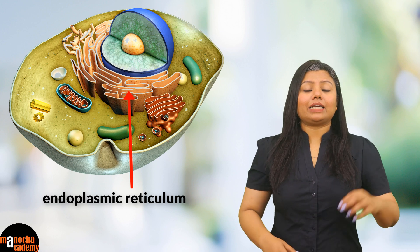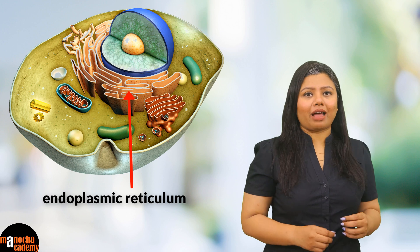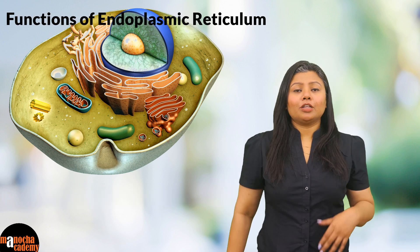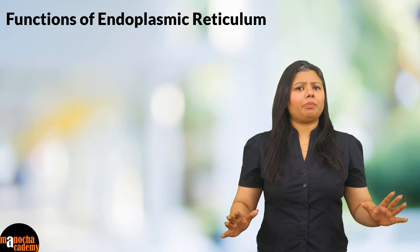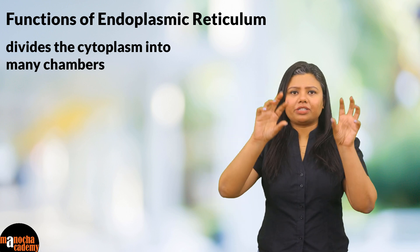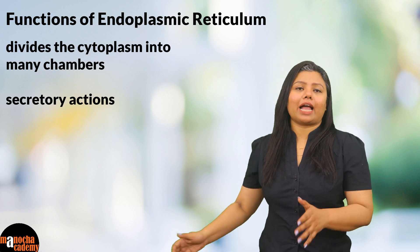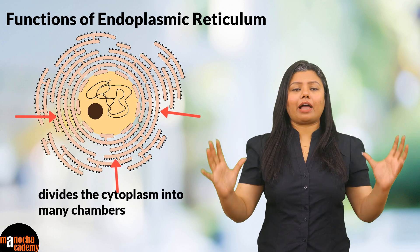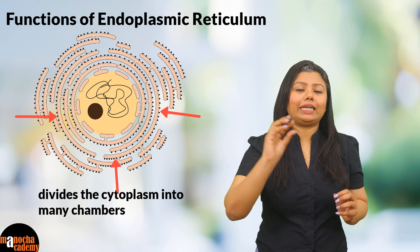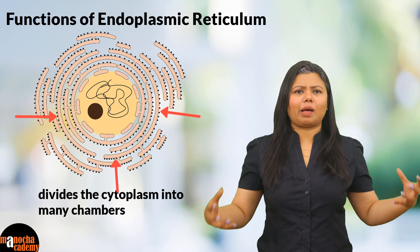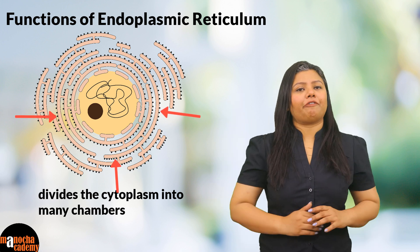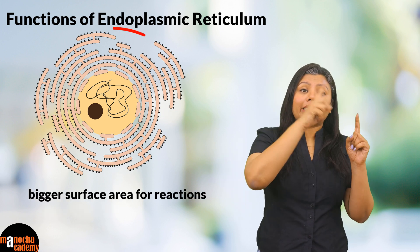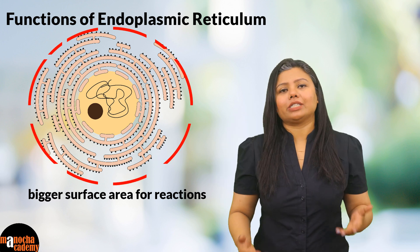Endoplasmic reticulum is especially rich in cells with secretory functions, because it is responsible for the formation of protein and lipid. Its first function is dividing the entire cell into separate chambers so that different reactions take place in different parts, preventing substrates, products, and enzymes from mixing and reducing efficiency. Additionally, because it is intensively folded, it creates a greater surface area for reactions taking place inside the cell.